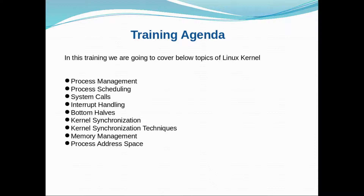Then we'll move to system calls — what exactly system calls are, why we need system calls, and why we cannot implement system calls in certain ways. Fourth is interrupt handling — how interrupts are handled in the Linux Kernel, why interrupt handling is difficult, and what considerations we have to take care of while handling interrupts. Then we'll move to bottom halves — what are the different bottom halves available in Linux Kernel, what was the need for bottom halves, and what problems are solved by bottom halves.